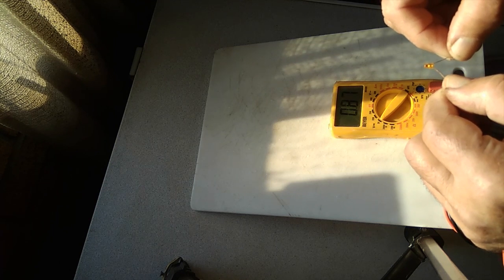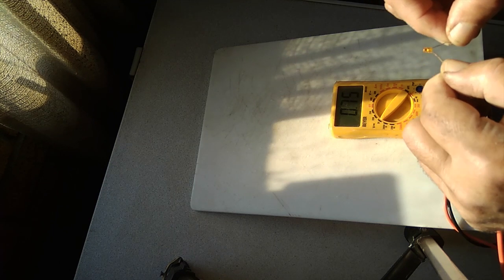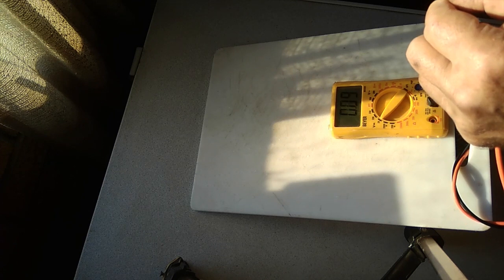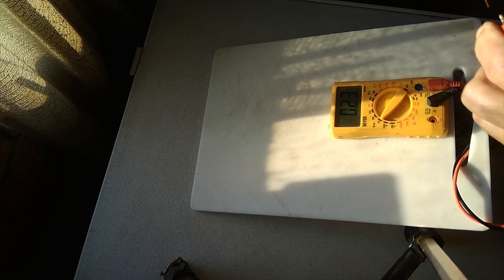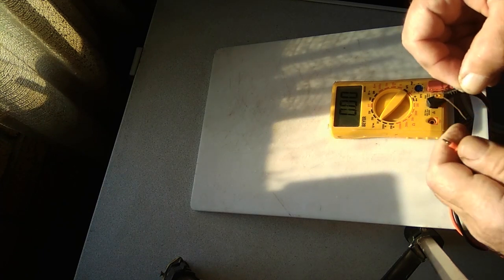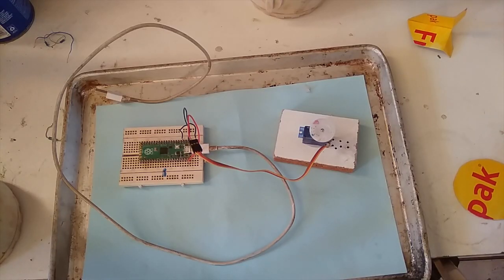When our LED is pointing to the sun it gets 0.8 volts. When it's in the shade it gets a tenth of that, 0.08 volts. I'm about to make the simplest solar tracker in the world.